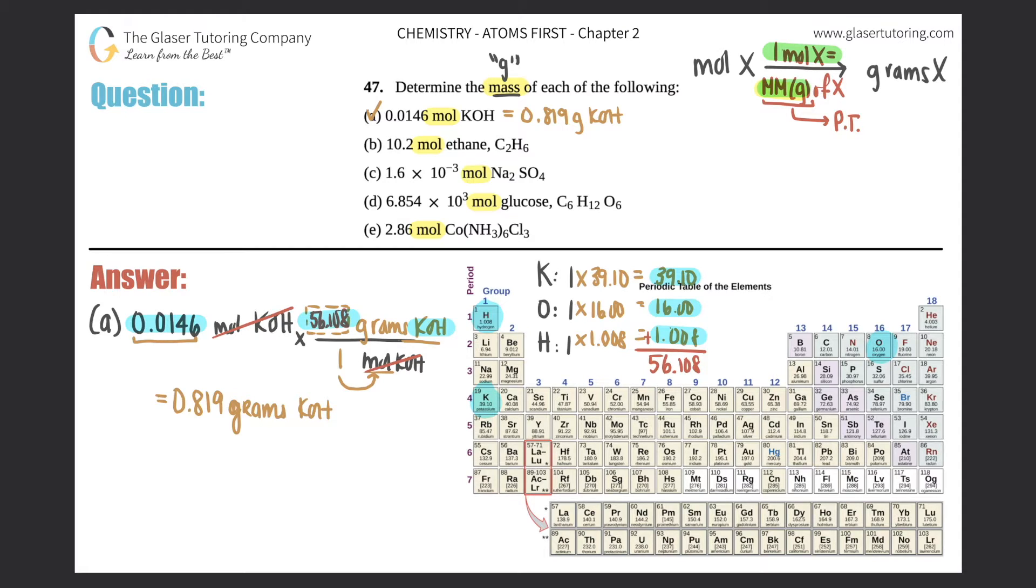Part B: They now tell us that they have 10.2 moles of ethane, which is C2H6. Times by that ratio - moles of C2H6 goes on the bottom and grams of C2H6 goes on the top. One mole equals the molar mass of the compound C2H6. So let's see if you get the same thing as me: two times 12.01 plus six times 1.008. If you want to shorten the numbers and just say 1 and 12 and 16, be my guest.